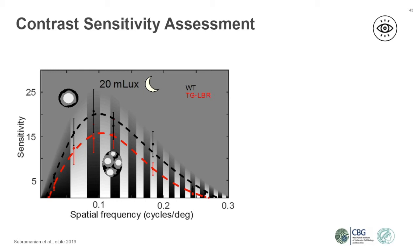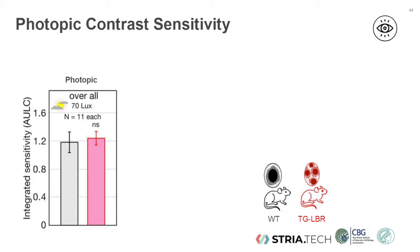To quantify and compare the contrast sensitivity of different animals, we calculated the area under the curve — higher values mean better contrast sensitivity or better integrated sensitivity. In photopic conditions, there was no difference between the wild-type mouse with the inverted nuclear architecture, shown in gray, and the LBR mice, shown in red. This shows that under daylight conditions there is no advantage of nuclear inversion, which may explain why diurnal animals have no need to invert their nuclei.